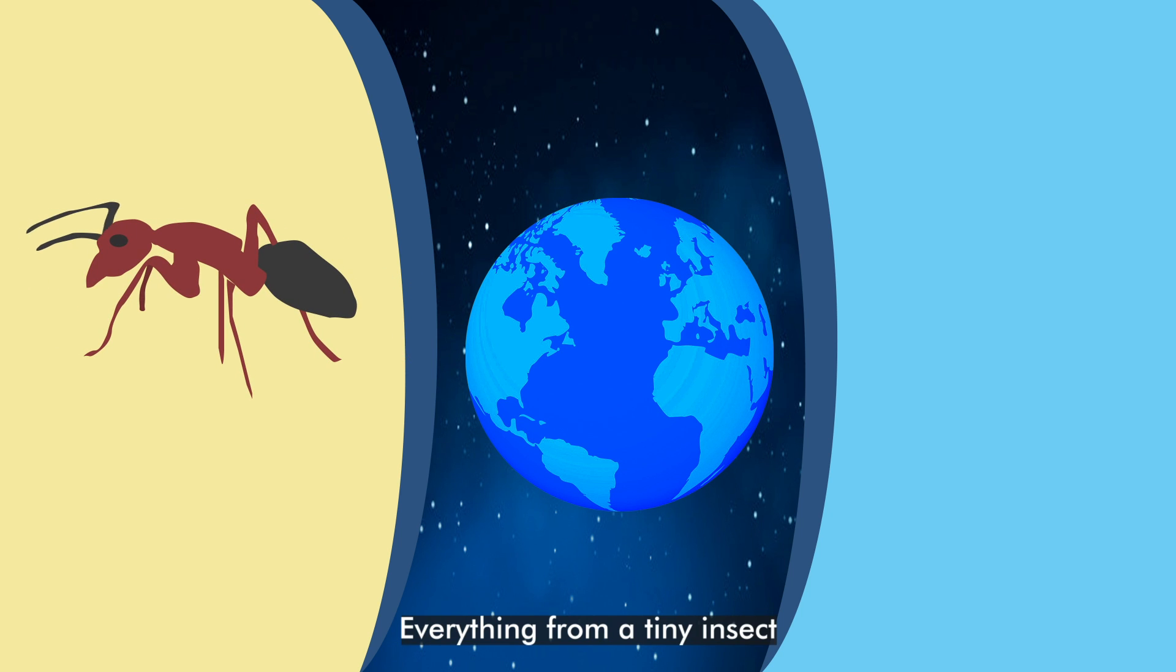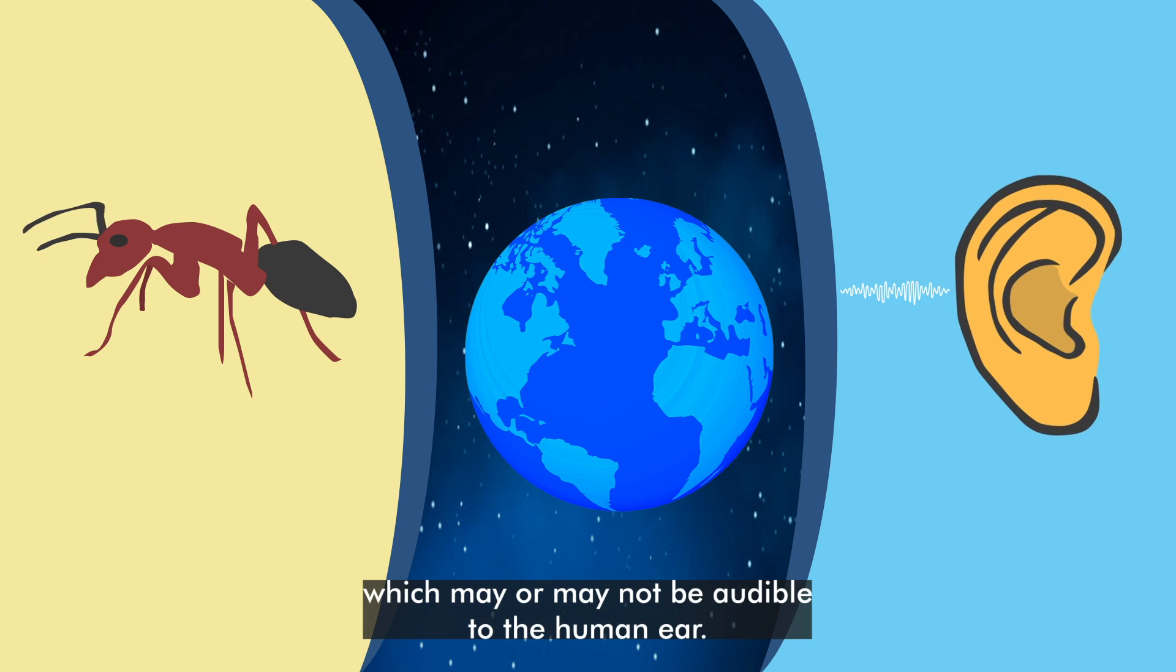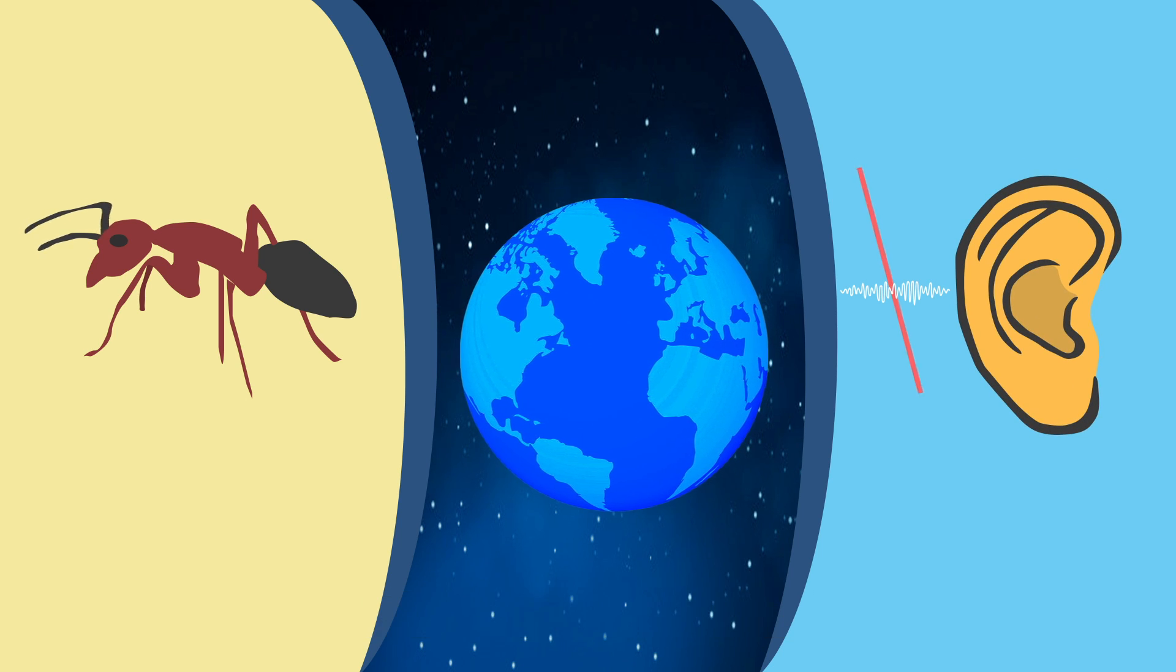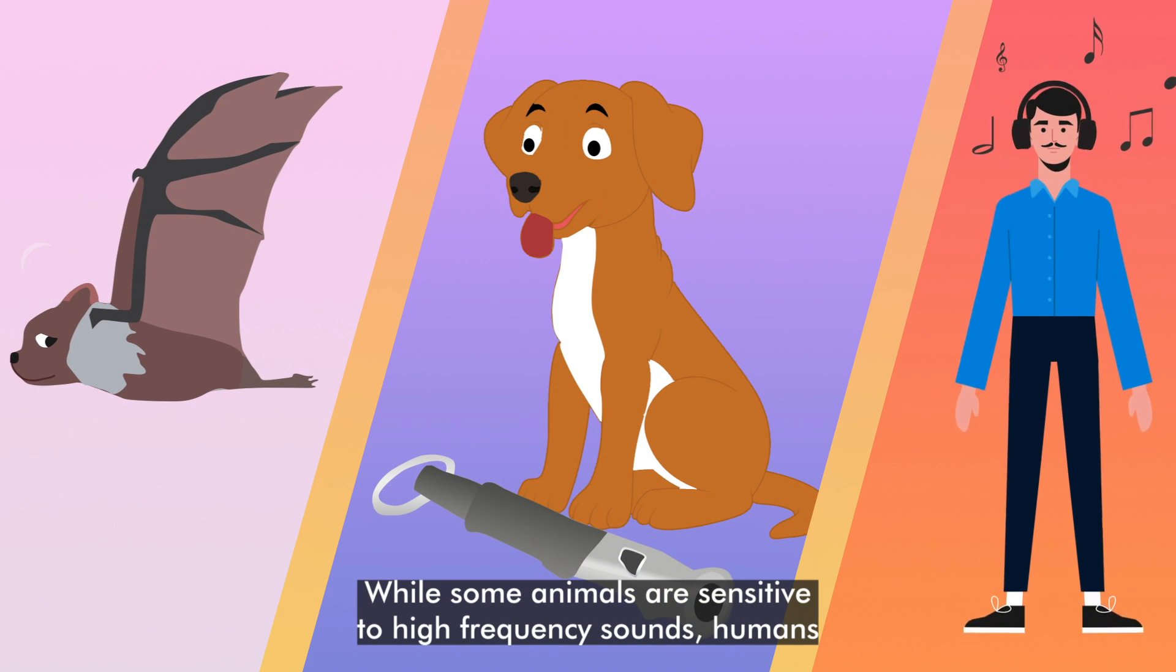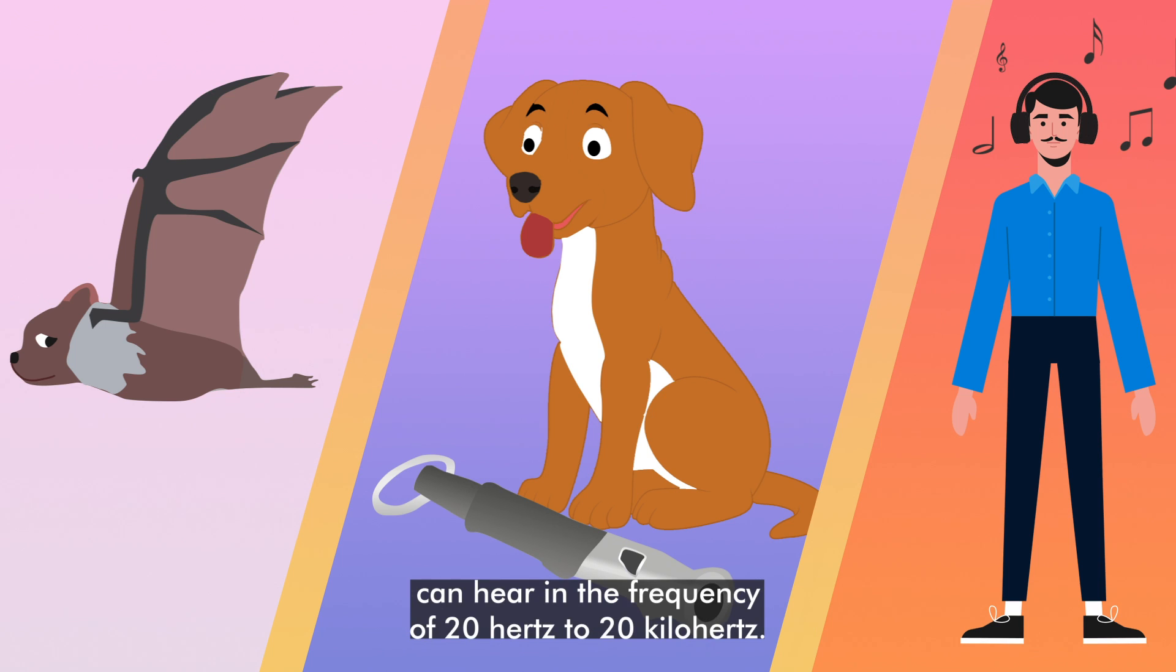Everything from a tiny insect to a gigantic planet gives off a vibration which may or may not be audible to the human ear. While some animals are sensitive to high frequency sounds, humans can hear in the frequency of 20 Hertz to 20 kilohertz.